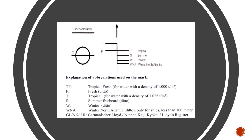Sometimes you may have other letters written on it, such as NK which stands for Nippon Kaiji Kaiokai, or LR which stands for Lloyd's Register, or even IR which stands for Indian Register. The plimsoll mark, or the freeboard mark as it is sometimes known, is a symbol indicating the maximum immersion of the ship in the water, leaving a minimal freeboard for safety. Freeboard is the distance from the waterline to the deck line.